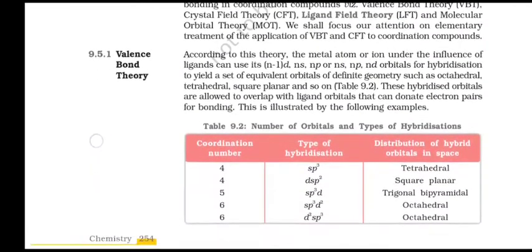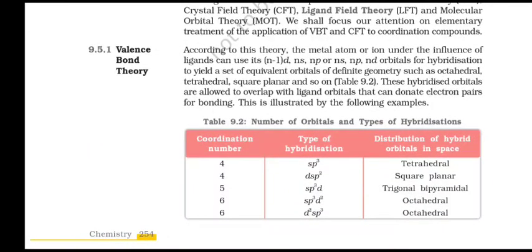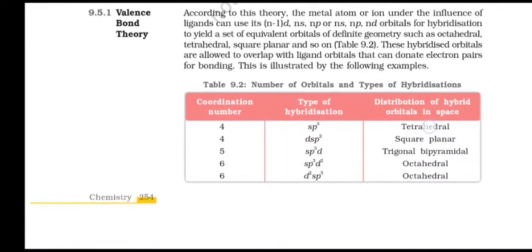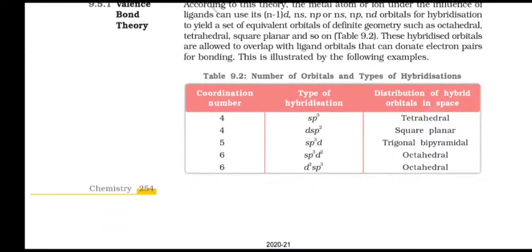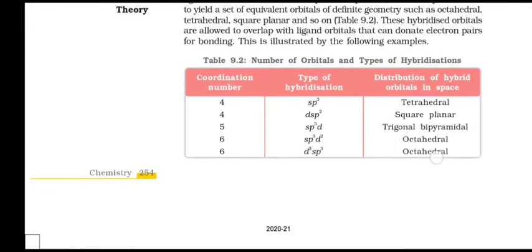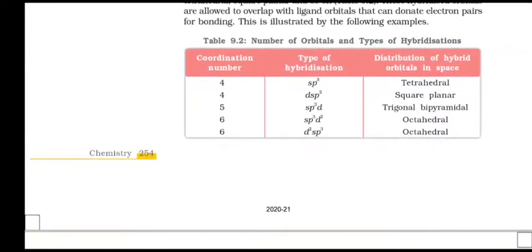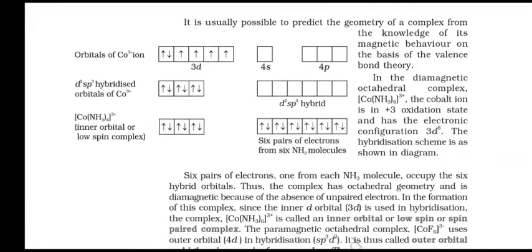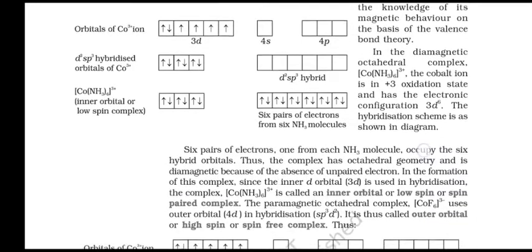Valence Bond Theory (VBT): According to this theory, the metal atom or ion, under the influence of ligands, can use its (n-1)d, ns, np, or ns, np, nd orbitals for hybridization to yield a set of equivalent orbitals of definite geometry such as octahedral, tetrahedral, or square planar. These hybridized orbitals are allowed to overlap with ligand orbitals that can donate electron pairs for bonding. It is usually possible to predict the geometry of a complex from the knowledge of its magnetic behavior on the basis of valence bond theory.